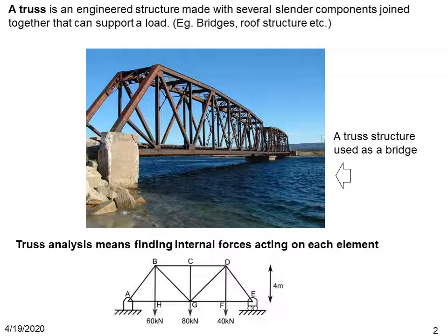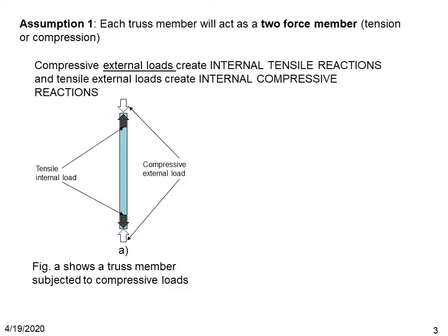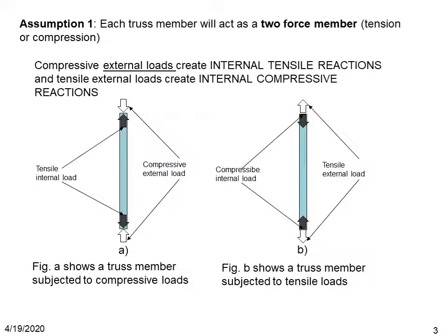In truss analysis we use two assumptions. Assumption one is that each truss member acts as a two-force member — either in tension or compression. Figure A shows a truss member subjected to external compressive load; the arrows show the element is under external compression, which leads to internal tensile load. On the other side, if a truss member is subjected to external tension, the arrows pulling the element outward generate internal compressive load in the structural member.